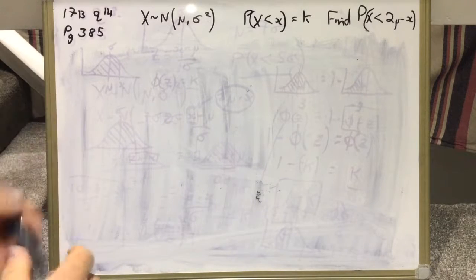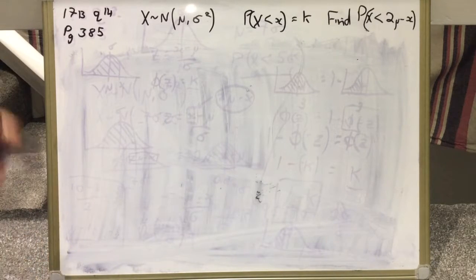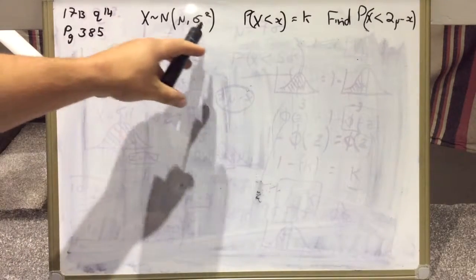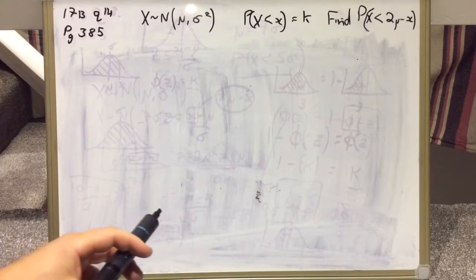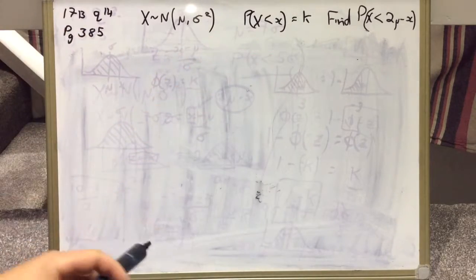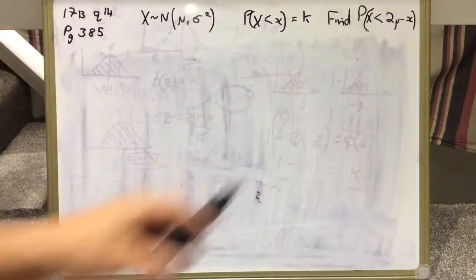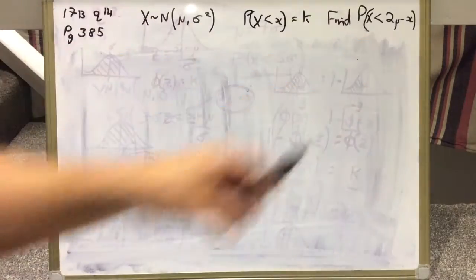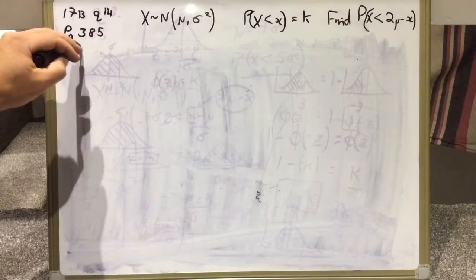Here we have Question 14 from exercise 17b, page 385. We're told we have a normal distribution with mean mu and standard deviation sigma. We're told that some specific outcome X, when it's less than that, the outcome's probability is K, and we're told to find the probability that X is less than something.